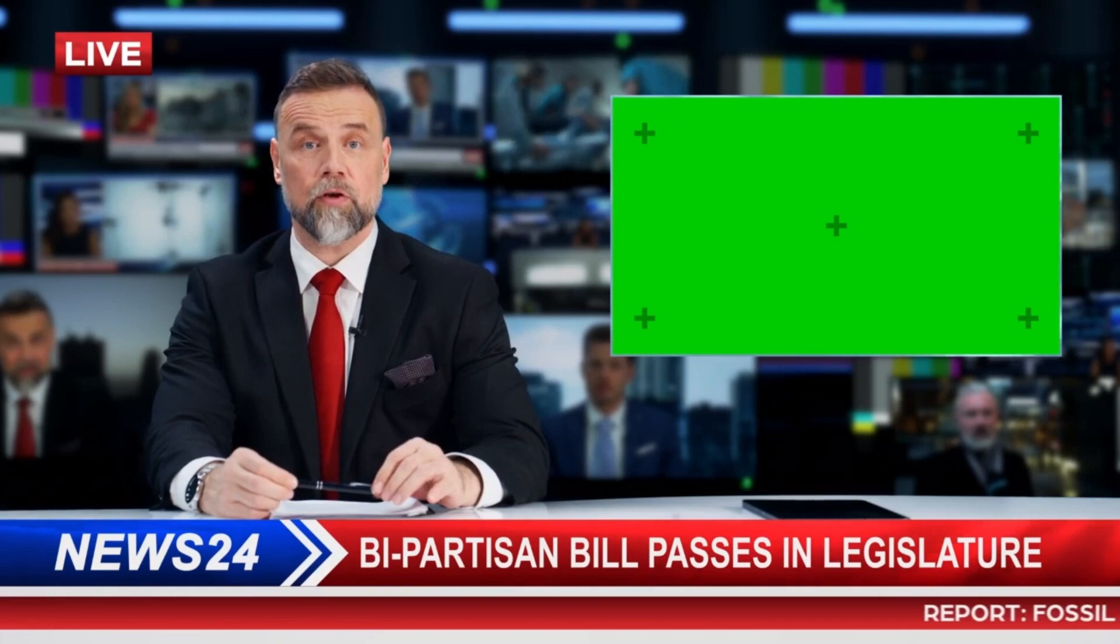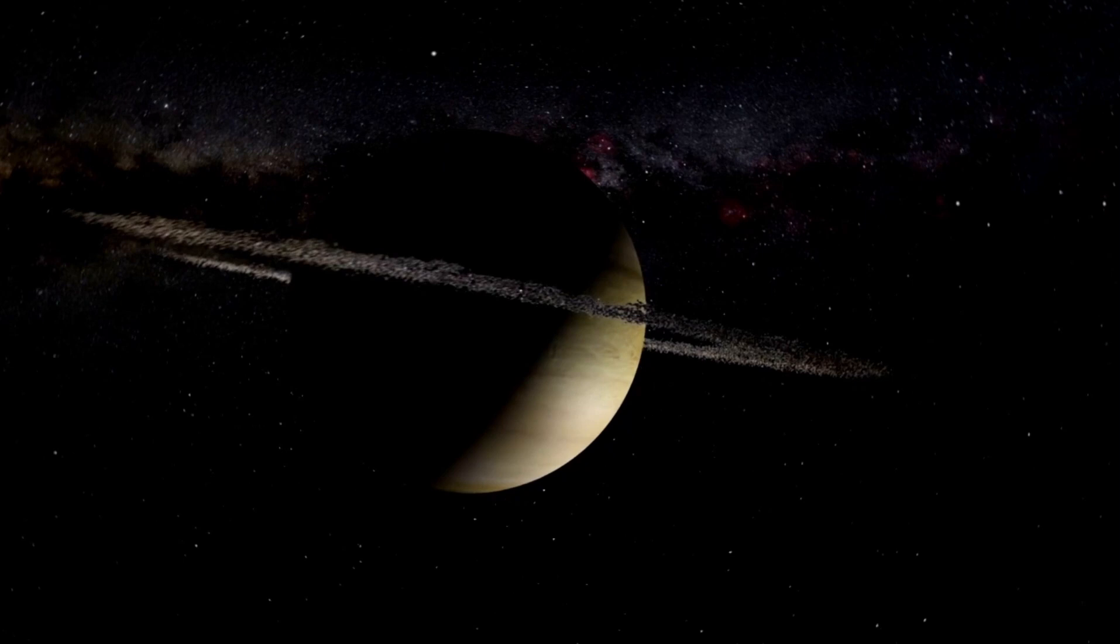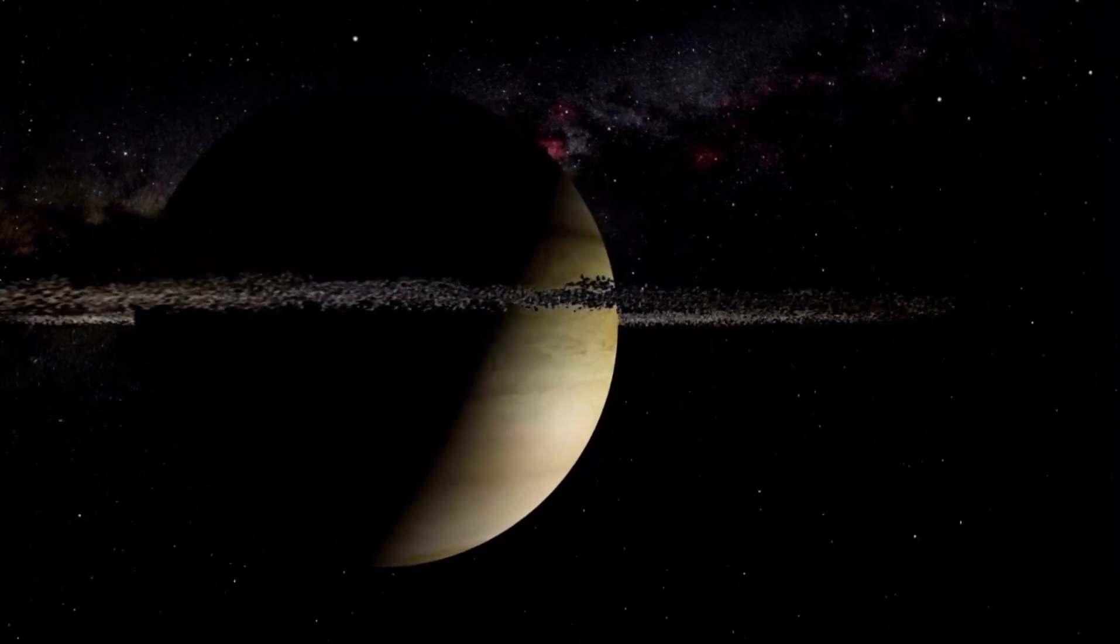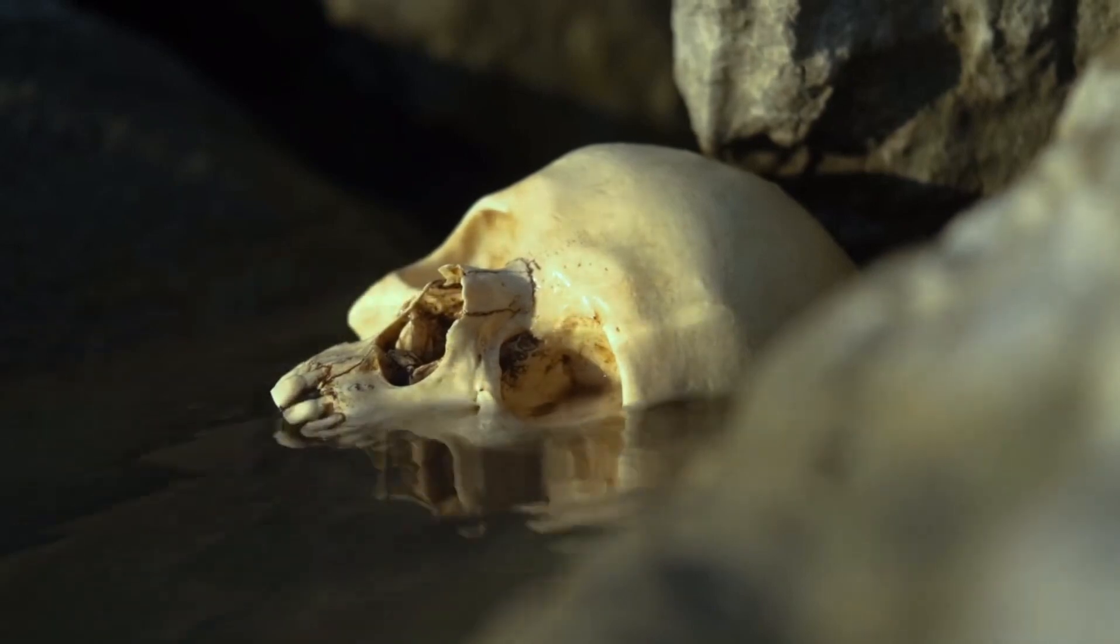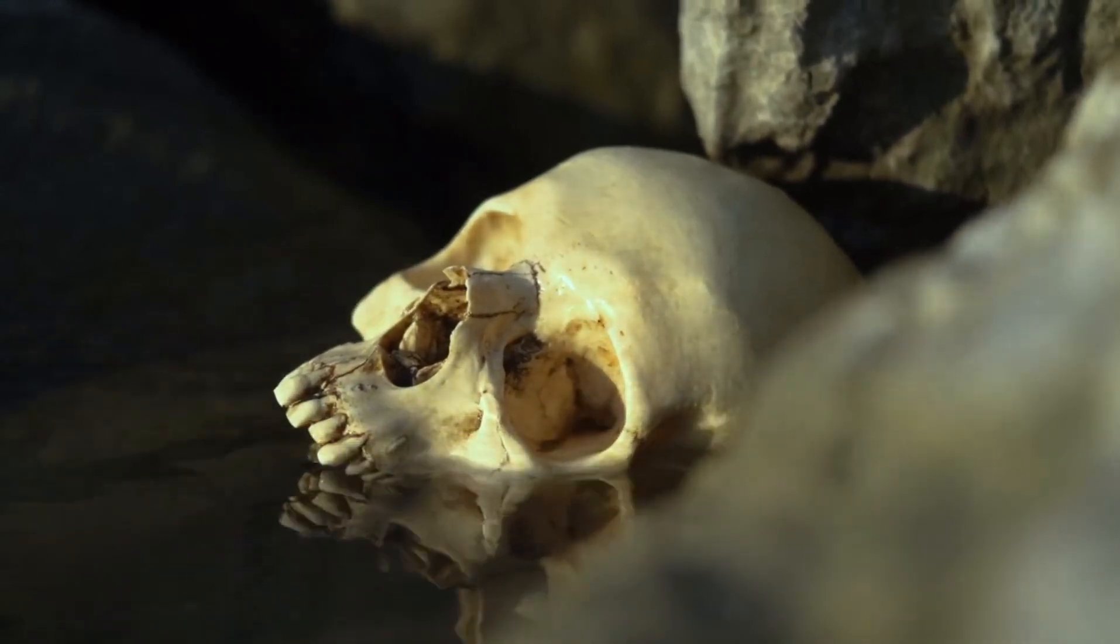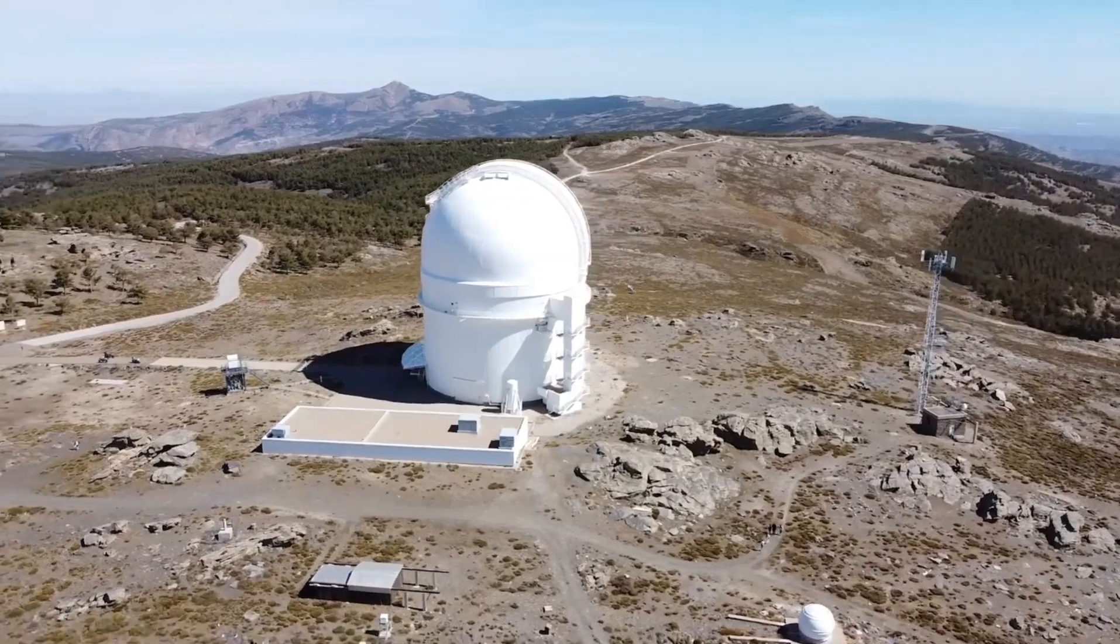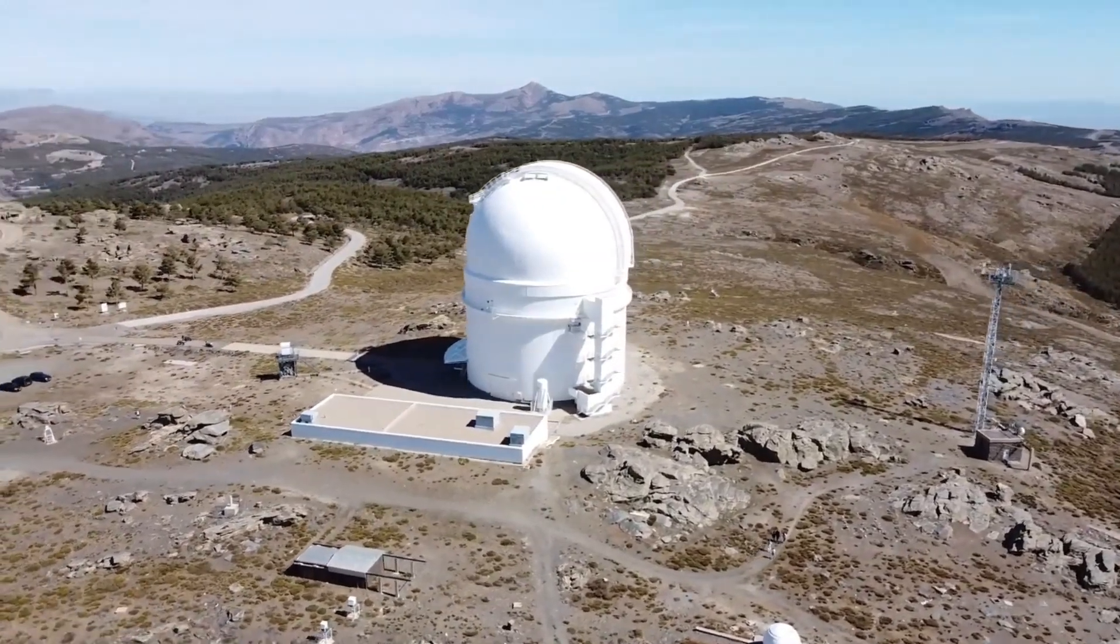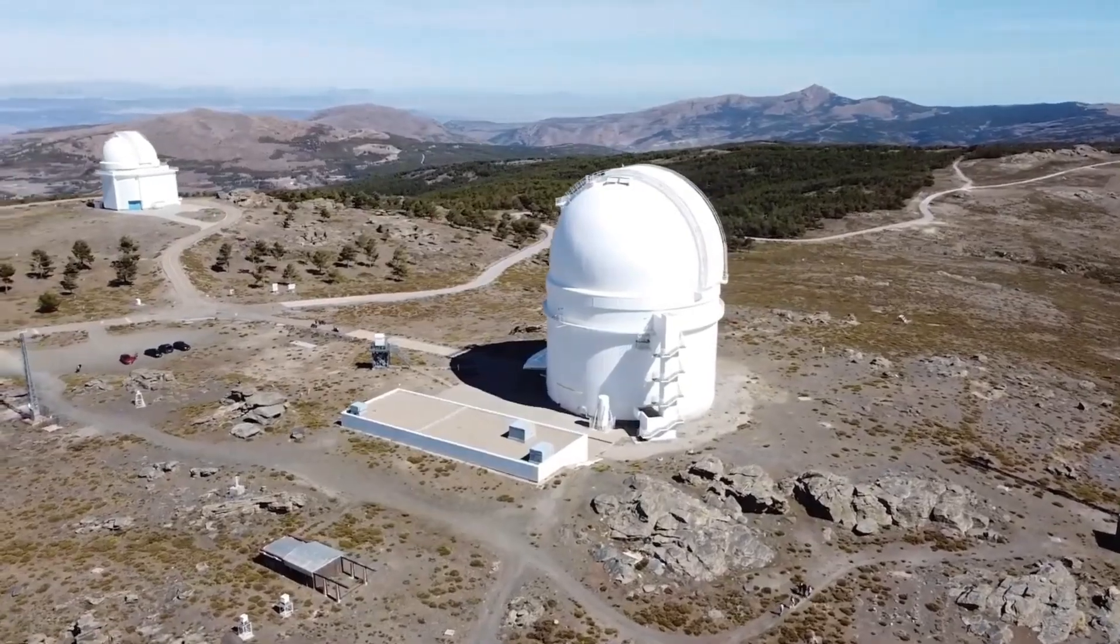Pluto, for years, was considered a desolate, frozen world on the fringe of our solar system. It seemed like a place too distant and too cold to have any significant features, much less something as unexpected as life. But that perception is quickly changing thanks to groundbreaking discoveries made by the James Webb Space Telescope. The James Webb Space Telescope is upsetting the apple cart. All of a sudden, we realize that we may have to rewrite all the textbooks about the beginning of the universe.